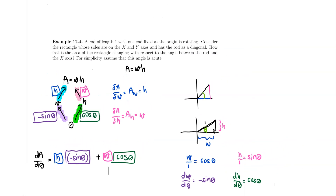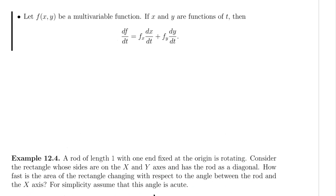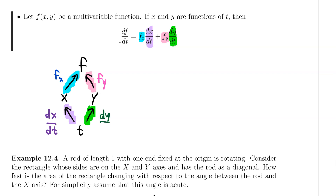This is called the multivariable chain rule. If f is a multivariable function depending on x and y, and x and y both depend on t, then df/dt = (∂f/∂x)·(dx/dt) + (∂f/∂y)·(dy/dt). Each term corresponds to one of the arrows we computed — df/dx times dx/dt plus df/dy times dy/dt.